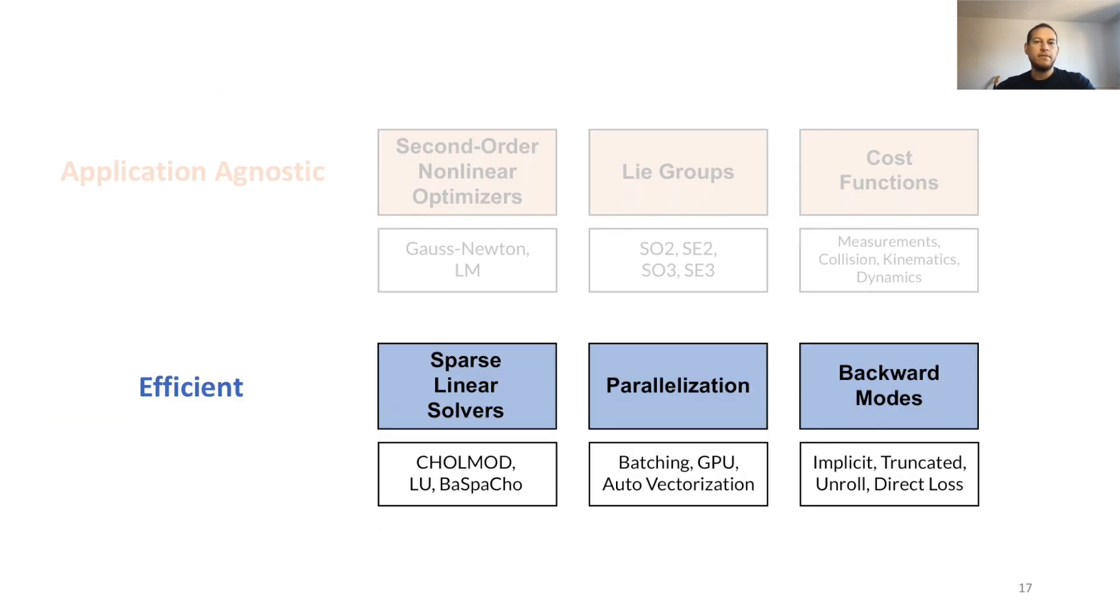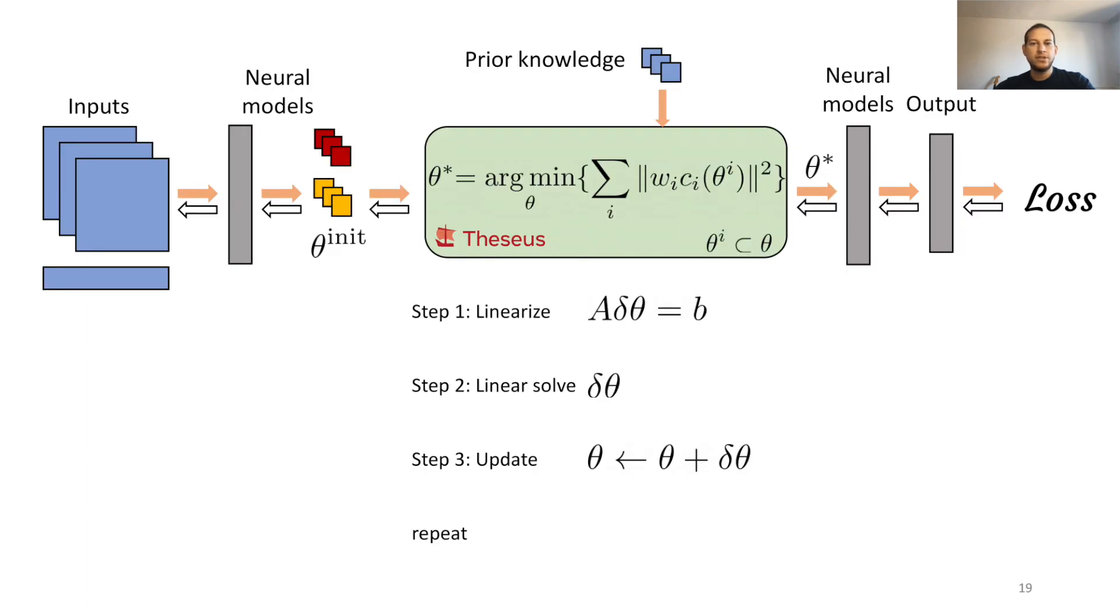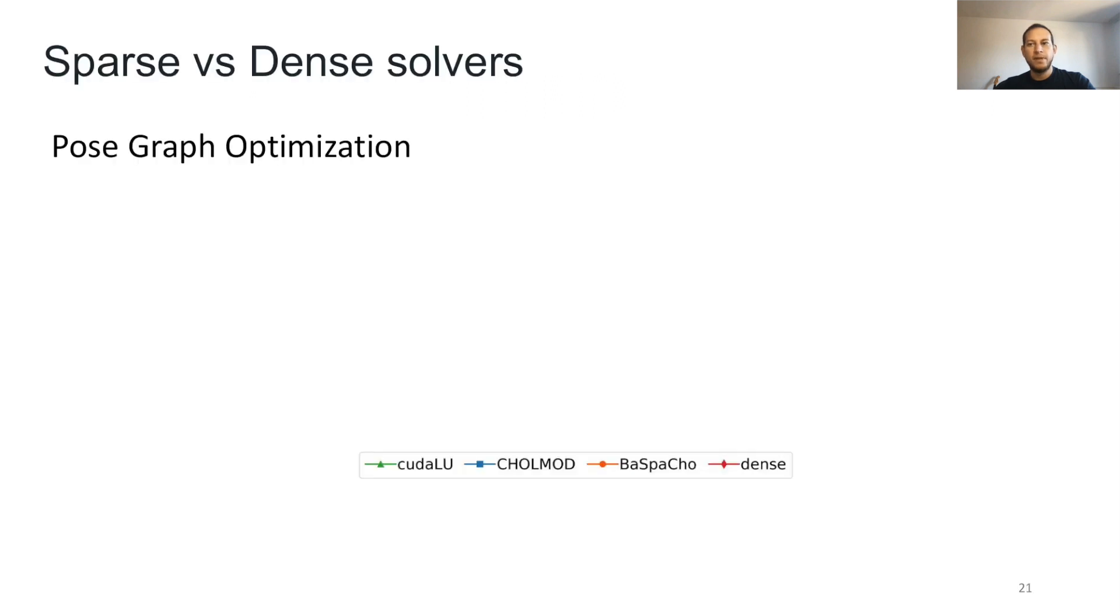We also make several advancements on efficiency. We implement differentiable sparse linear solvers with custom backends that support batching and GPU acceleration. This is important because every iteration of nonlinear least squares solves a linear system that's typically sparse. However, PyTorch-native linear solvers rely on dense representation, and thus we need other ways to exploit these problems' inherent sparsity.